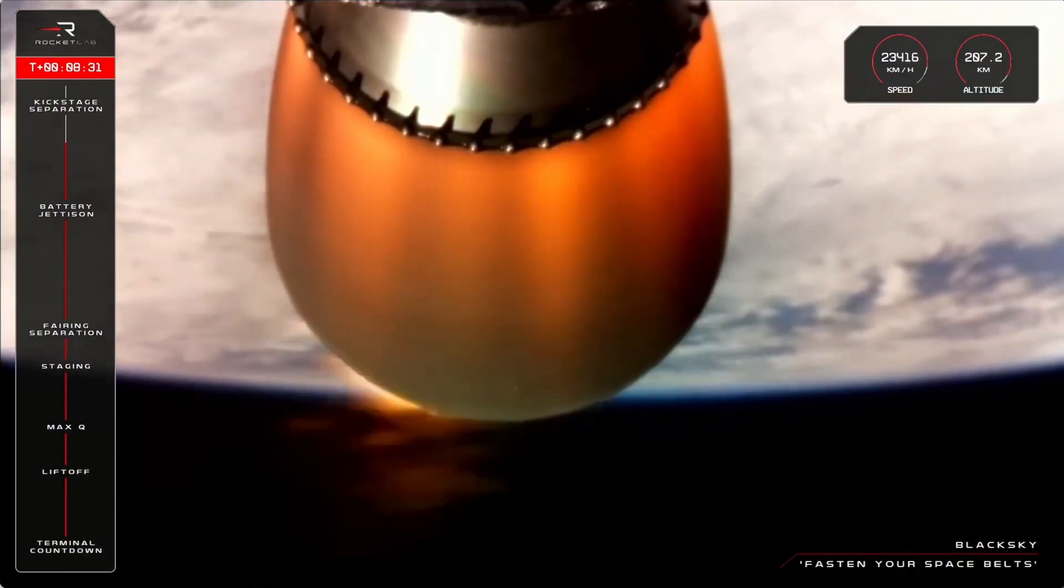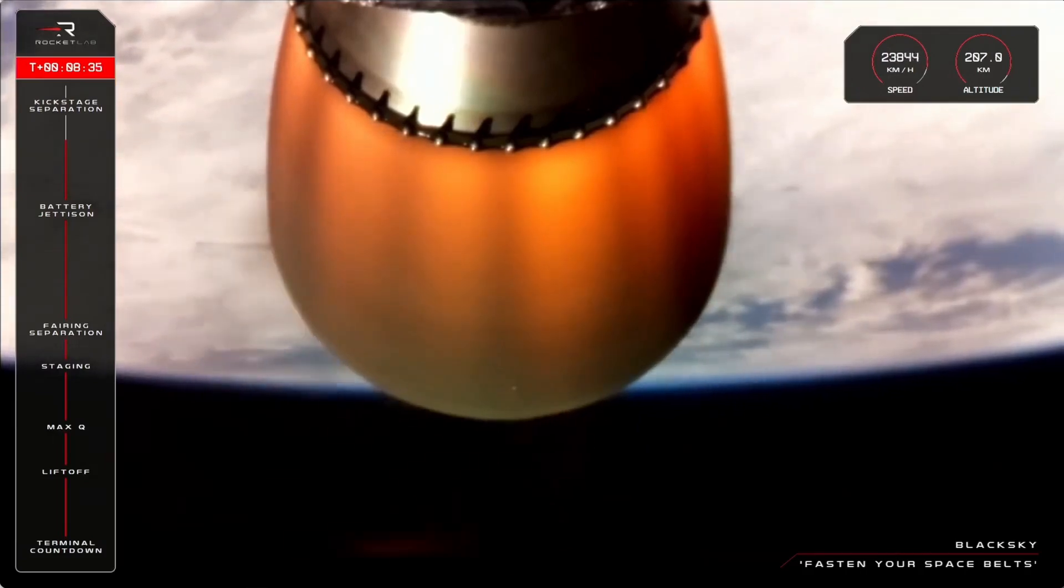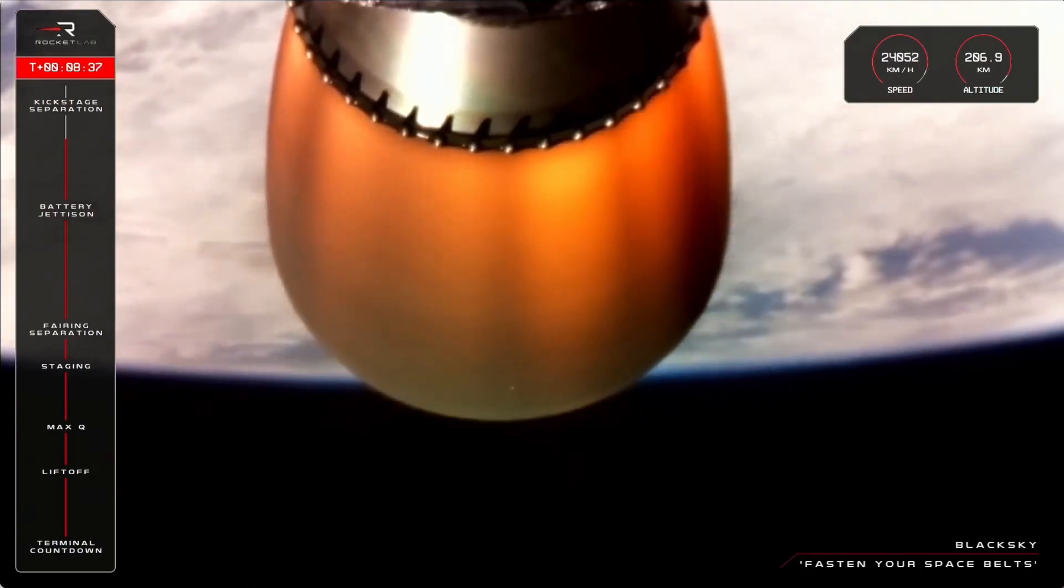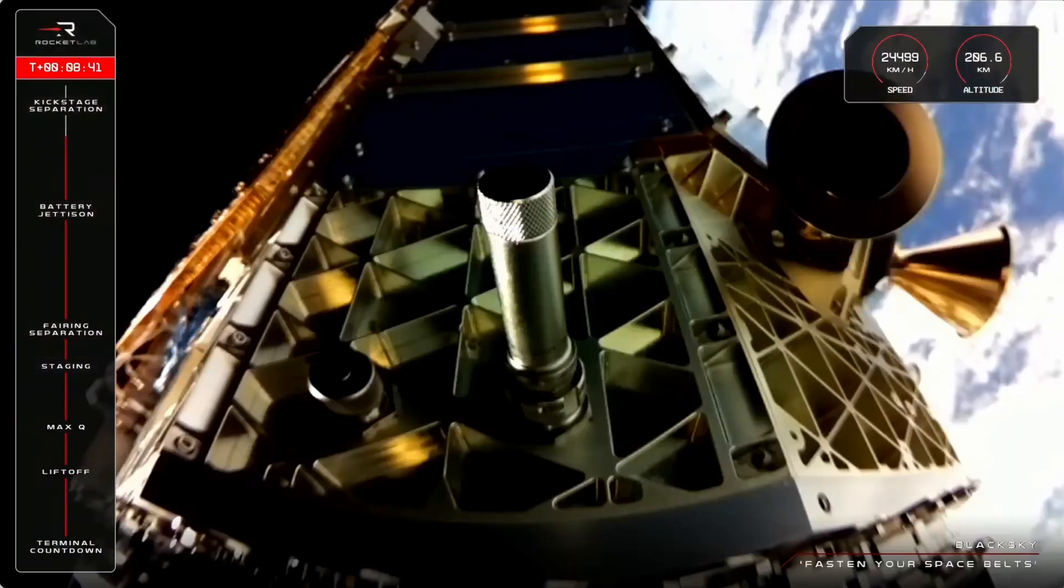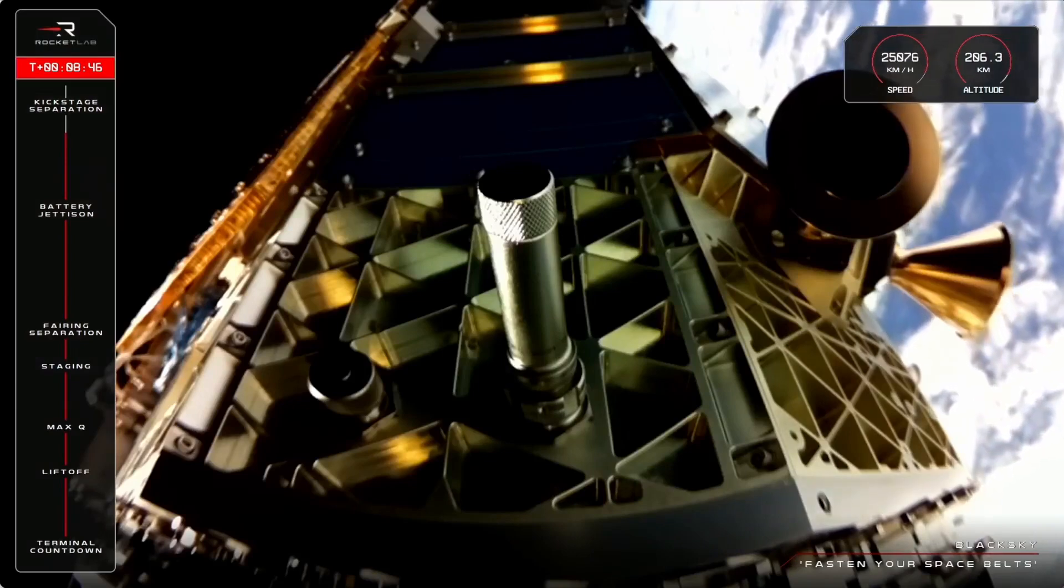Only a few seconds now until we reach SECO, or second engine cutoff. This is the moment when Electron's second stage Rutherford engine shuts down ahead of stage separation, with the kickstage carrying Black Sky's Gen 3 payload. Standing by with Mission Control for that call.